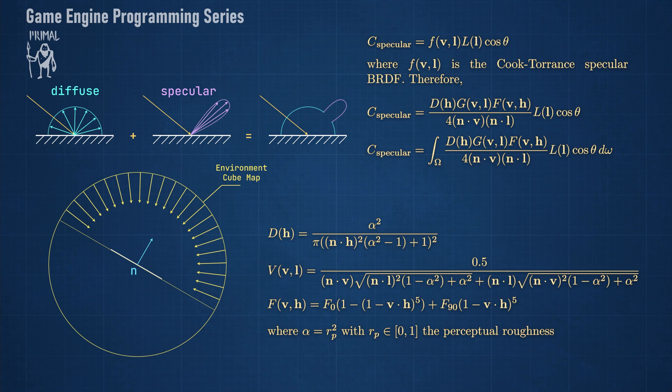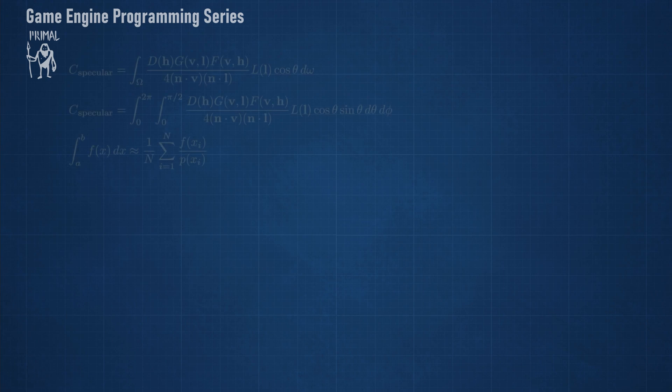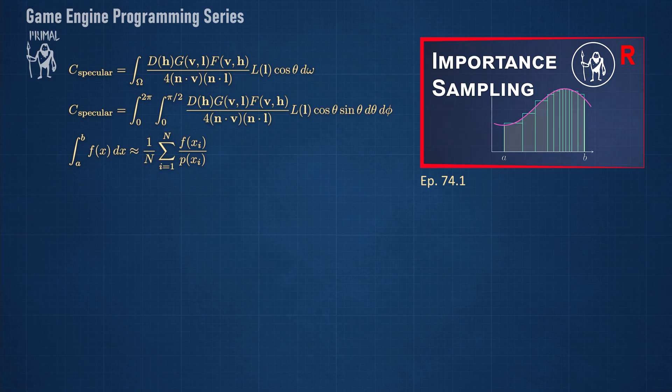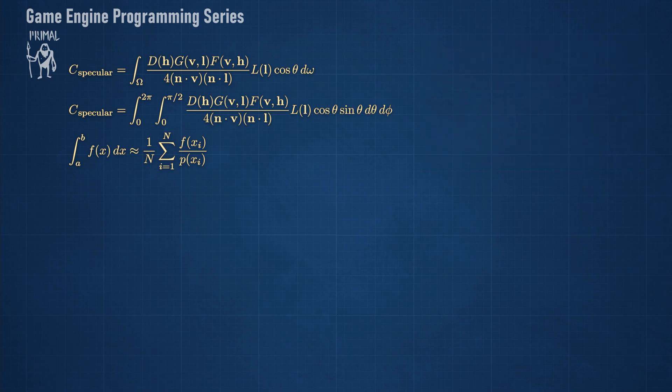Let's look at how we can evaluate this integral with the aid of importance sampling. So here is the integral which we can write using polar coordinates like we did for the diffuse BRDF. The theory of importance sampling states that we can approximate this integral with this sum for which we have to choose a probability density function.